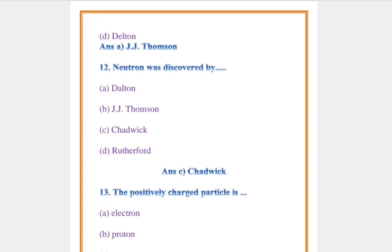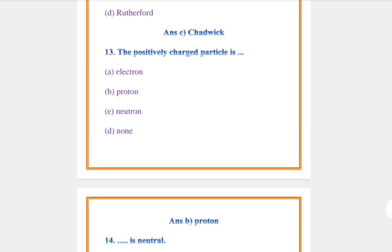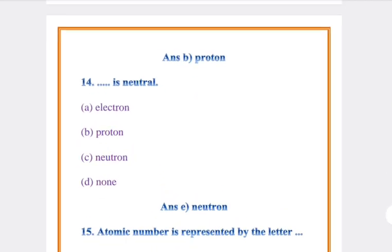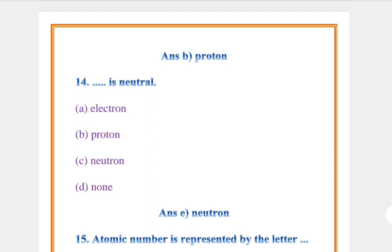Question number 12: Neutrons was discovered by? Answer: C, Chadwick. Question number 13: The positively charged particle is? Answer: B, Proton. Question number 14: Das is neutral. Answer: C, Neutral.